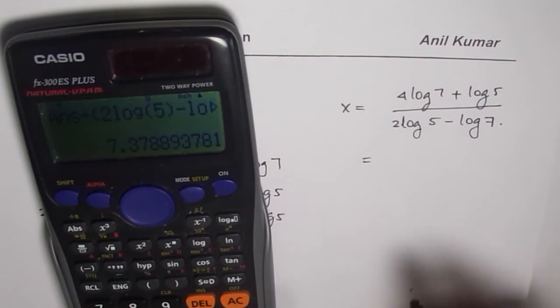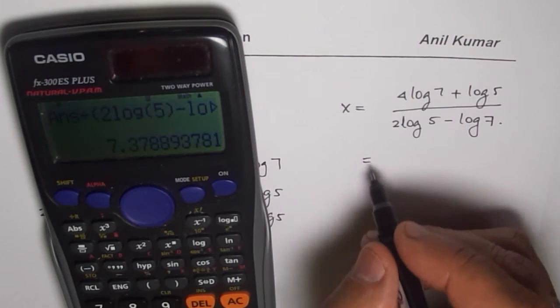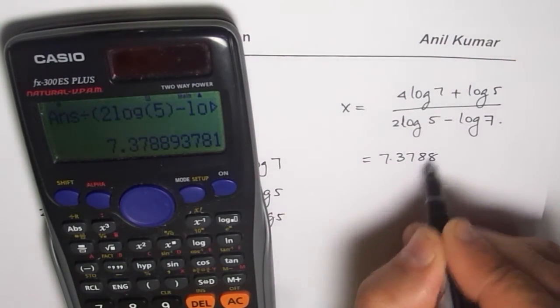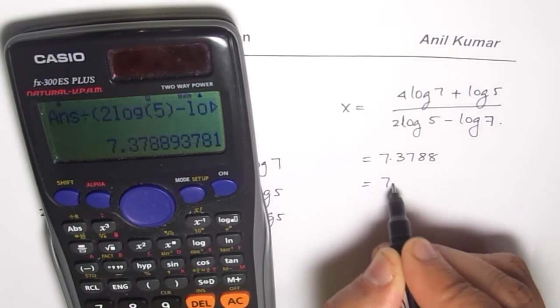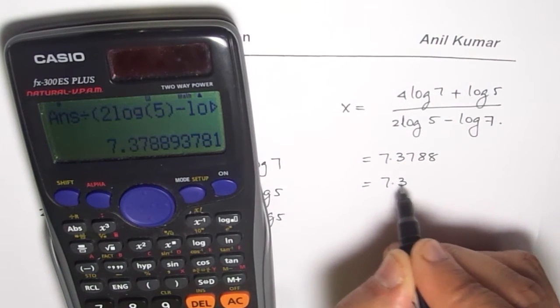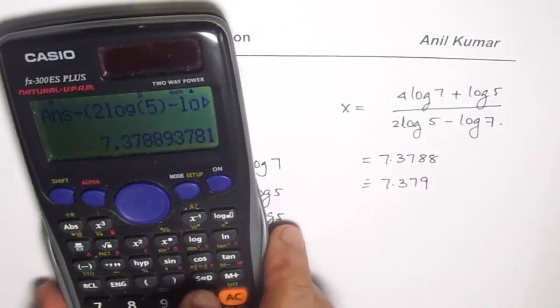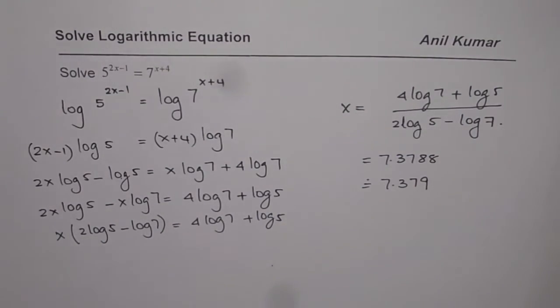And that gives us 7.3788. Rounding to 3 decimal places we get 7.379 as our answer. So that is how we can solve exponential equations using logarithms.